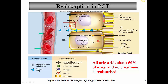Substances like glucose, amino acids, lactate, and phosphate are all reabsorbed through this mechanism and make it back into the peritubular capillaries. Water, potassium, and chloride also make it back. Some proteins that occasionally leak through the filtration membrane are taken up by the tubular cells via endocytosis, fused with lysosomes, broken down into component amino acids, and the amino acids are then shipped back into the peritubular capillaries.